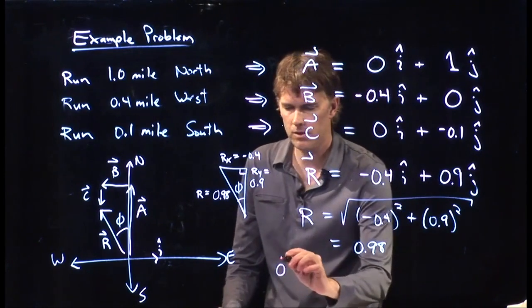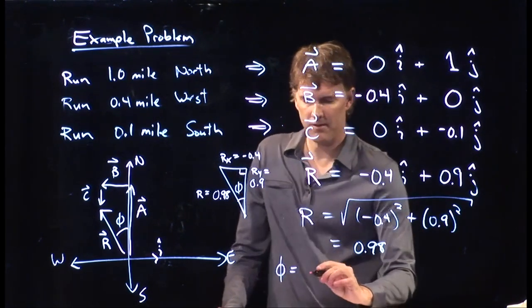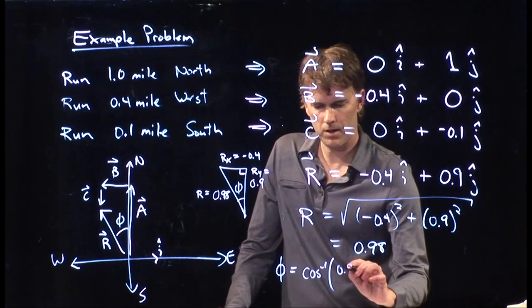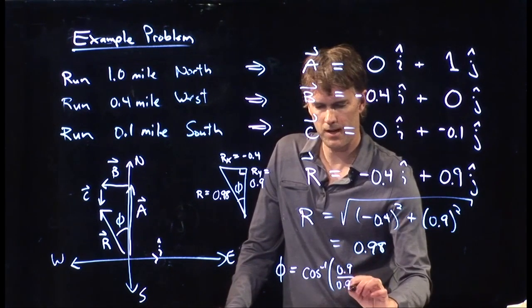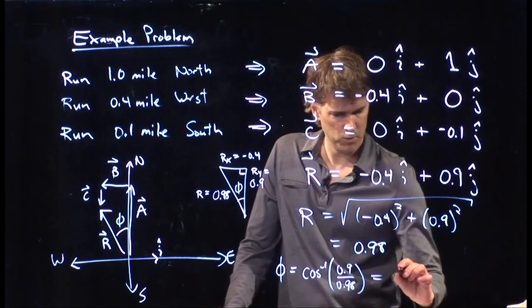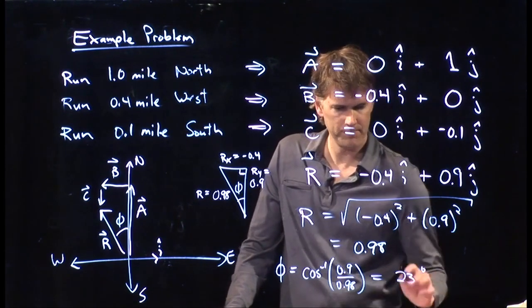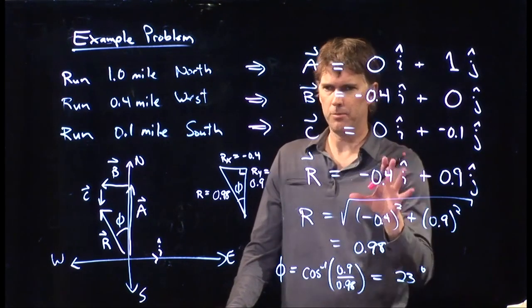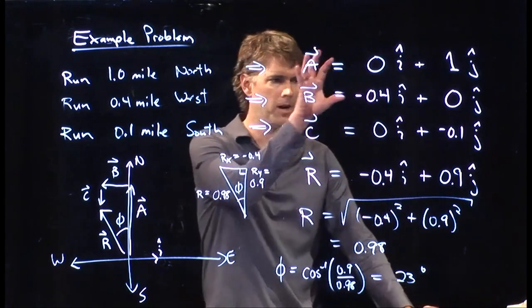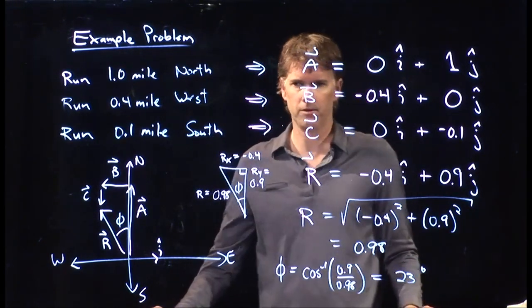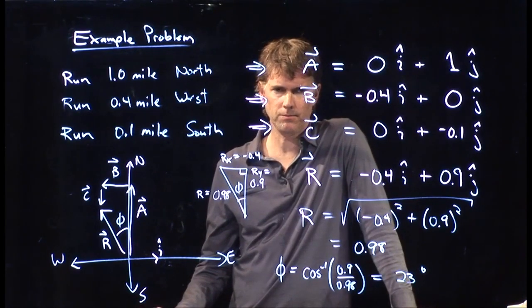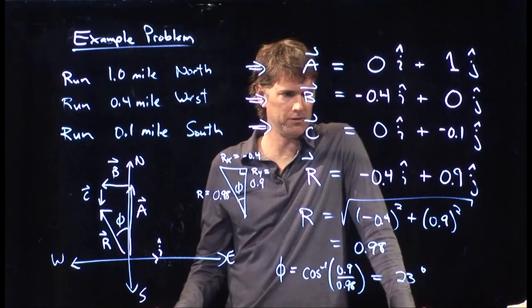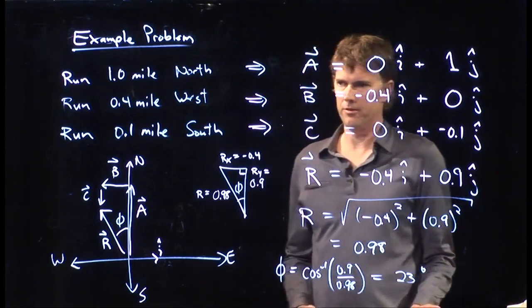And so phi, you can do any trig relation you like. But let's take the arc cosine of 0.9 over 0.98. And if I remember right, I think we got 23 degrees. Okay. Any questions about this one? Any questions about how we approached it with the unit vectors? Okay. Good. Hopefully that one is clear. If not, come see me in office hours. Cheers.